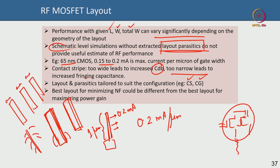Whether you use a common source or common gate configuration also determines your layout and parasitics. The best layout for minimizing noise may not be the same as the best layout for maximizing gain, so layout can be very application-specific.